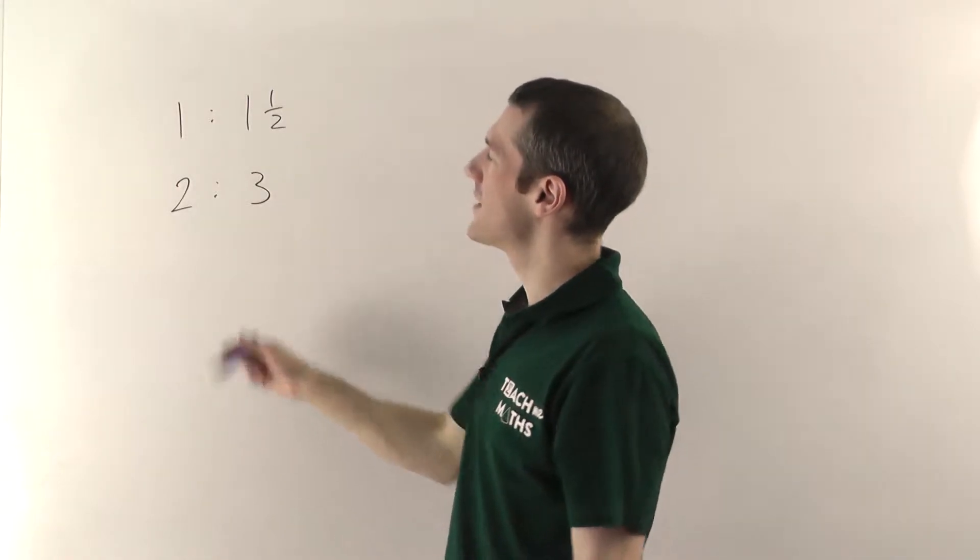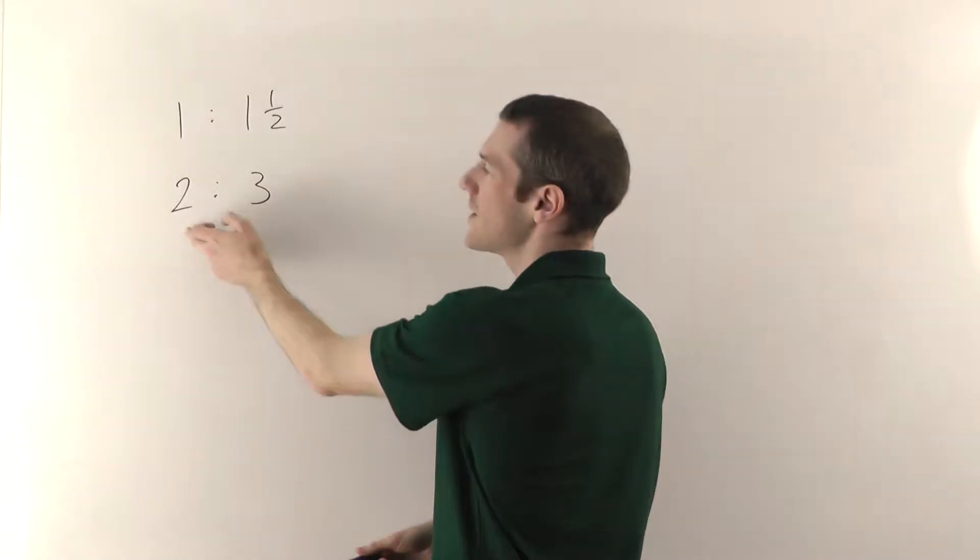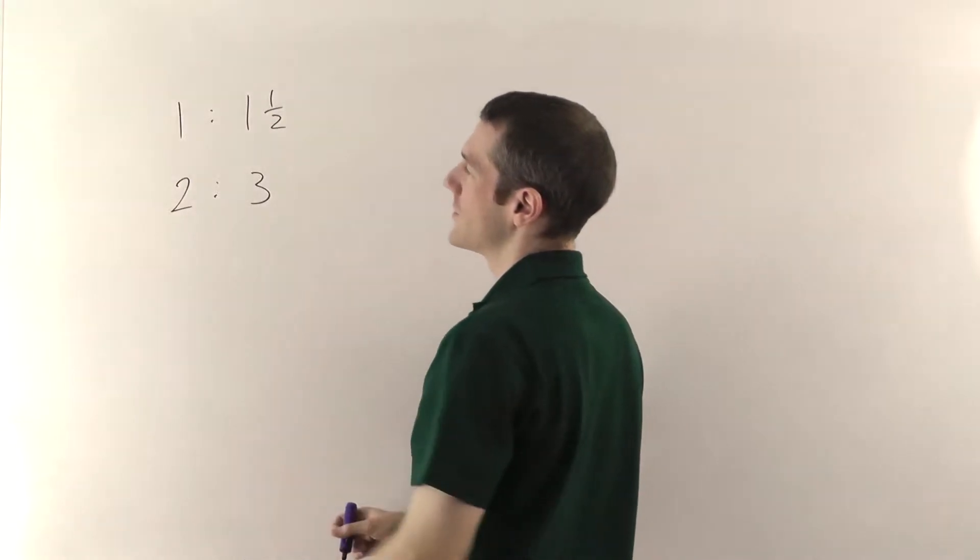So ratios are written like this. There's always a colon in the middle, the two dots on top of each other, and you generally have to say which thing is which. So in this case I'm saying this is my rice and this is my water.